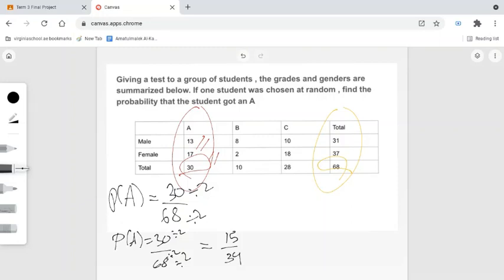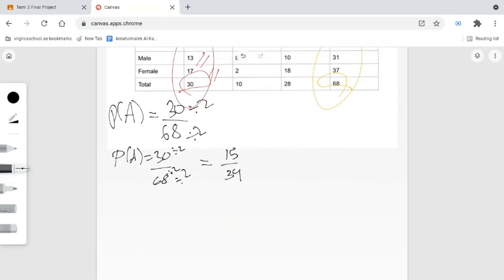This is a fraction in simplest form. Let's also give the probability as a decimal. To convert the fraction to a decimal, we will divide. So 15 divided by 34.